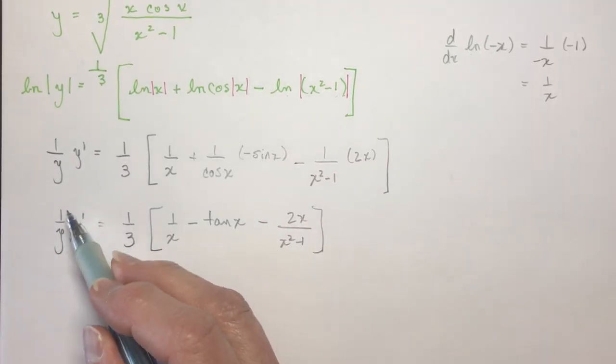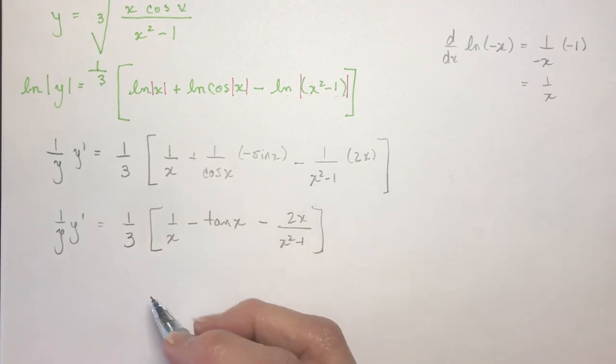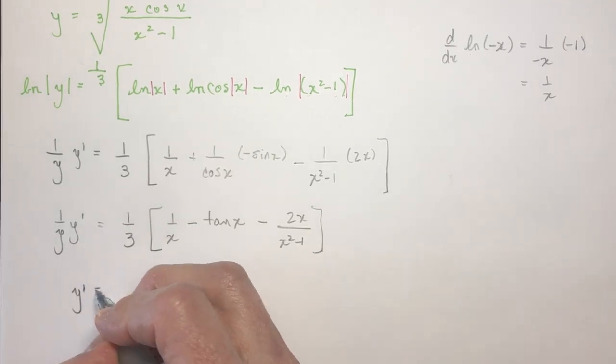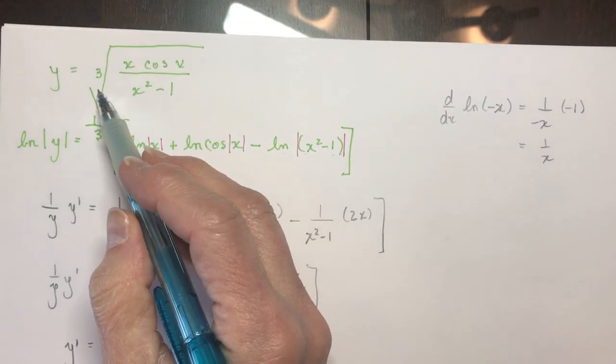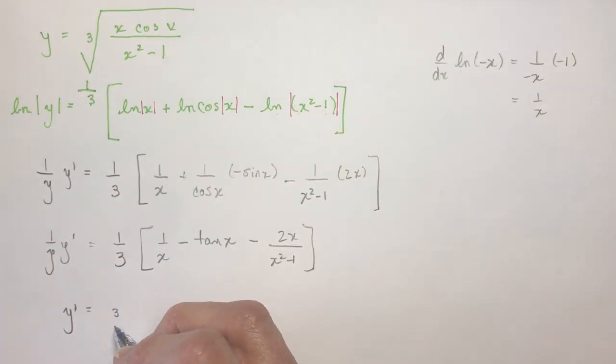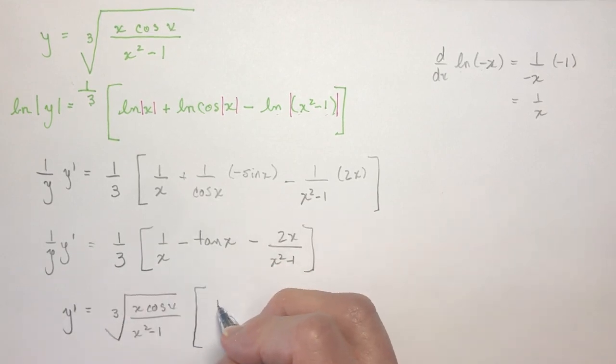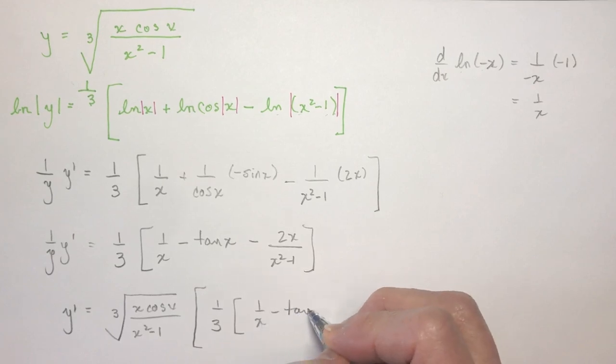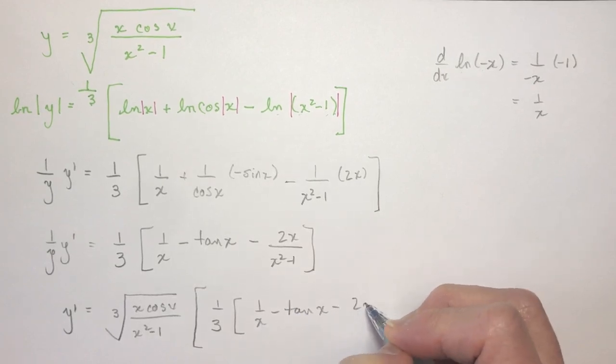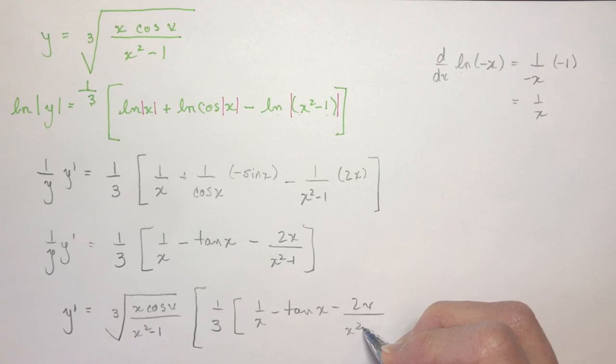And finally, don't leave this one over y here. We want just y prime. So that means I'm going to multiply by y, which again is this function here. So I have cube root of x cos x divided by x squared minus one. And then I just have to write out everything I had here before. So one third, one over x minus tan x minus 2x over x squared minus one. So that was pretty easy.